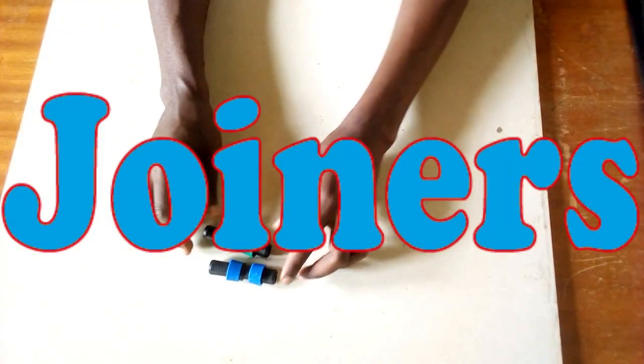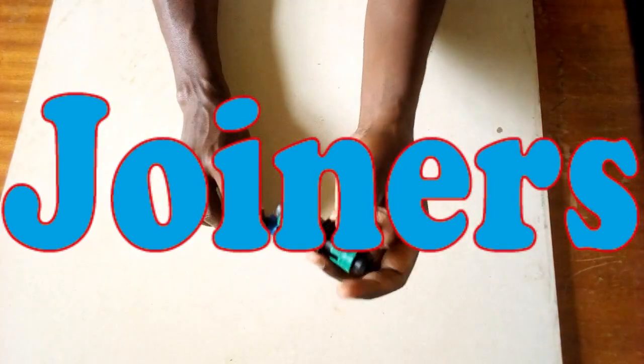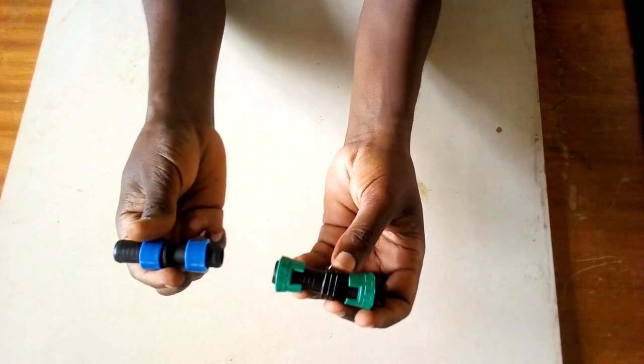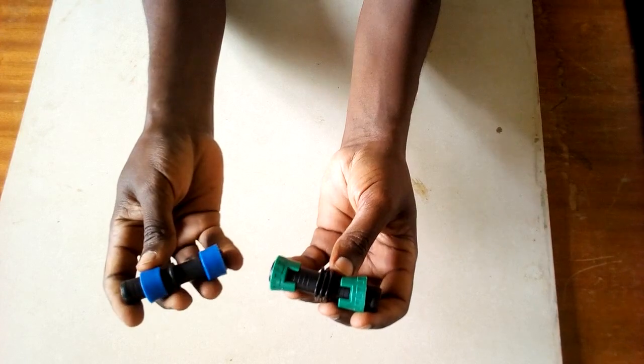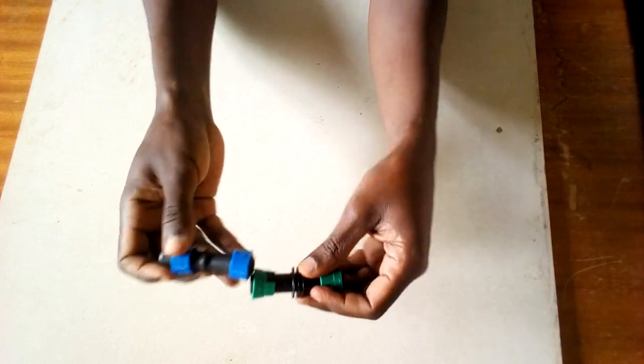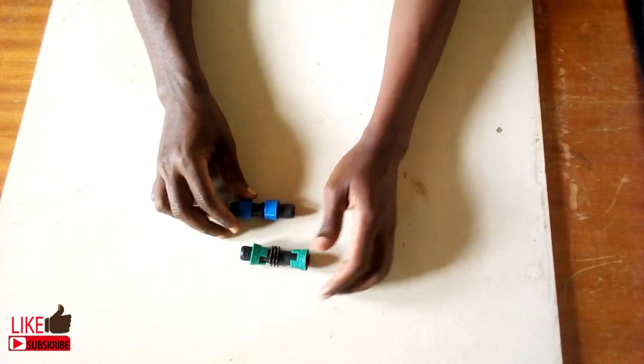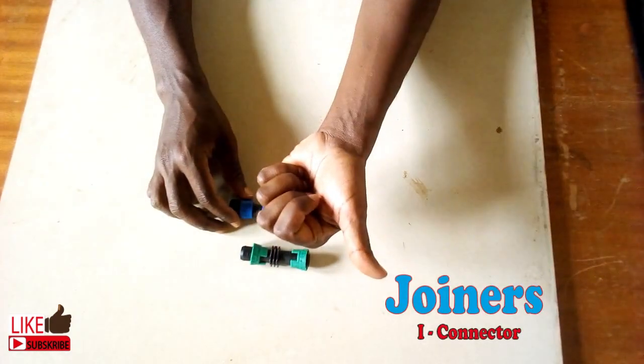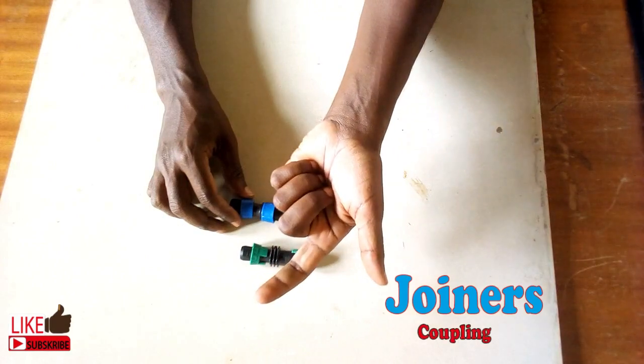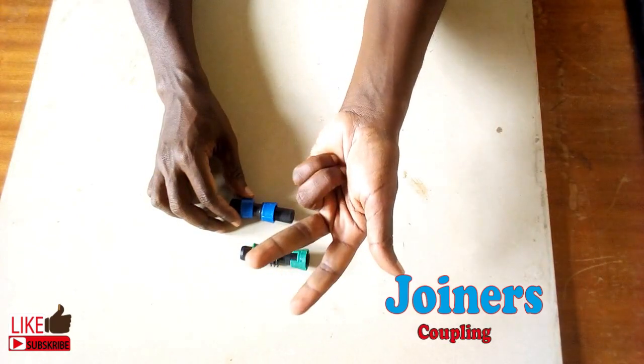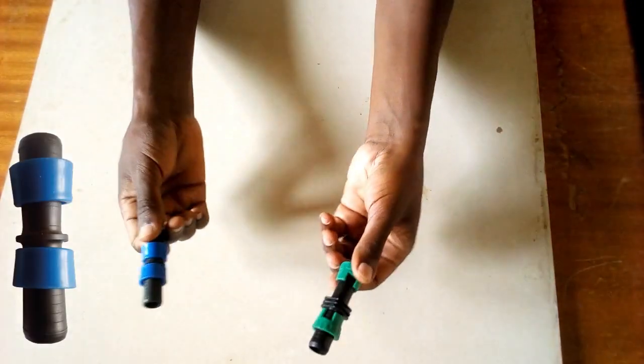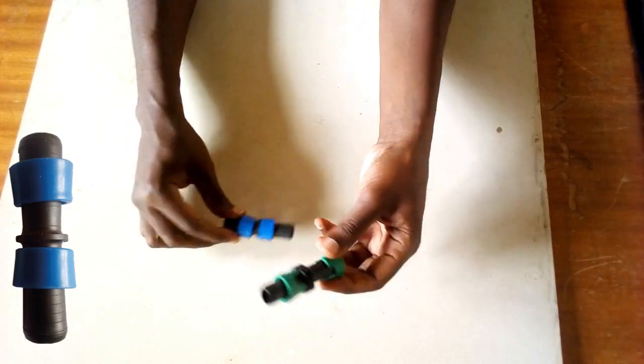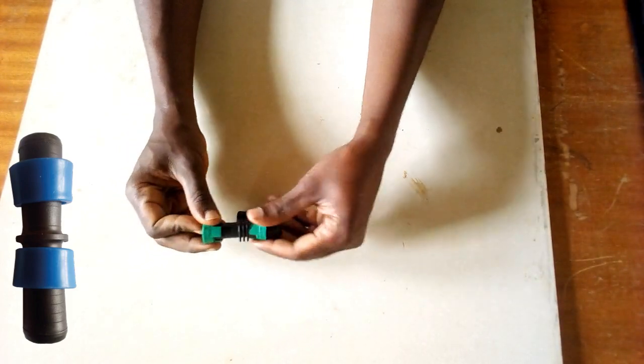How do you connect two drip lines? Well, you can use a connector like this. I used to call them eye connectors. Other farmers call them joiners while others also call them couplings. This is what they mean. These ones are lock coupling.